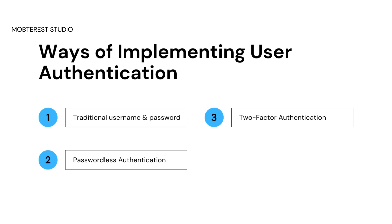Some key considerations for implementing two-factor authentication include SMS verification, where it integrates SMS APIs to deliver verification codes to users' registered mobile numbers securely. We also have the OTP, which can be sent to a specific phone number.